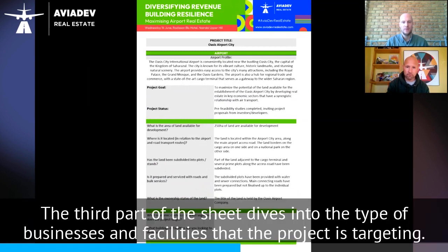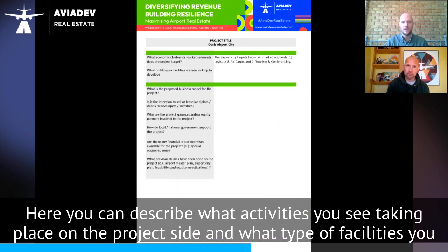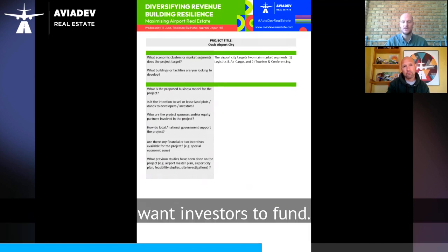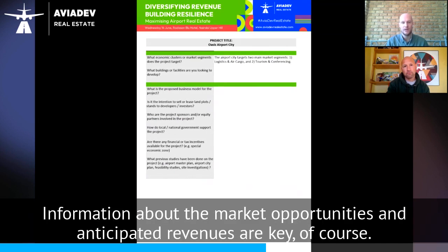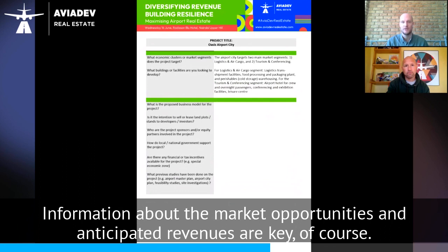The third part of the sheet dives into the type of businesses and facilities that the project is targeting. Here you can describe what activities you see taking place on the project site and what type of facilities you want investors to fund. Information about the market opportunities and anticipated revenues are key, of course.